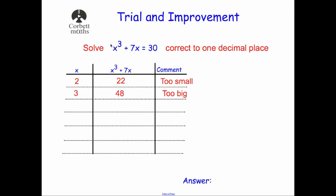So this is our first example. It says: solve the equation x cubed plus 7x equals 30, correct to one decimal place. Two of the trials have been done for us. We've tried two — so two cubed plus seven times two gives us 22, and that's too low because we want 30. And we've tried three — three cubed plus seven times three is equal to 48, and that's too large.